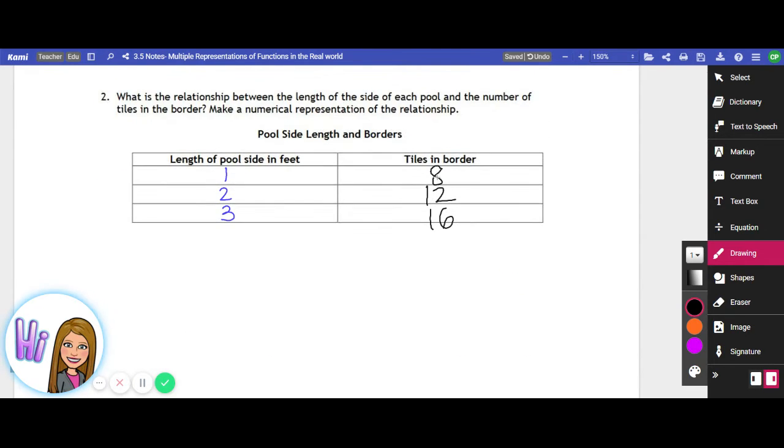If I just pull up right now the numerical table that we created, you can kind of see that for a poolside length of one we had eight, two was twelve, three was sixteen, and also with the pictures.